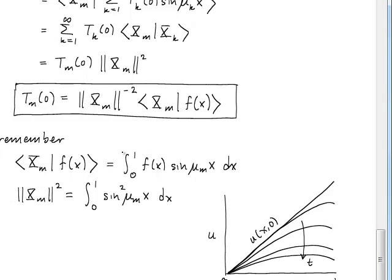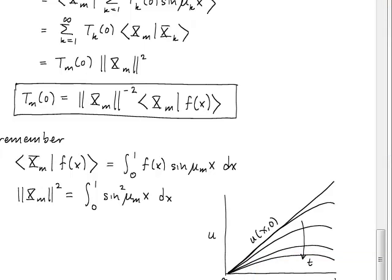The inner product notation represents integrals over the domain: the numerator is the integral of f(x) times the m-th eigenfunction, and the denominator is the integral of the eigenfunction squared. Qualitatively, the solution decays gradually toward equilibrium as temperatures equalize at the boundary. This completes the solution of the heat equation with Dirichlet and Robin boundary conditions using separation of variables.